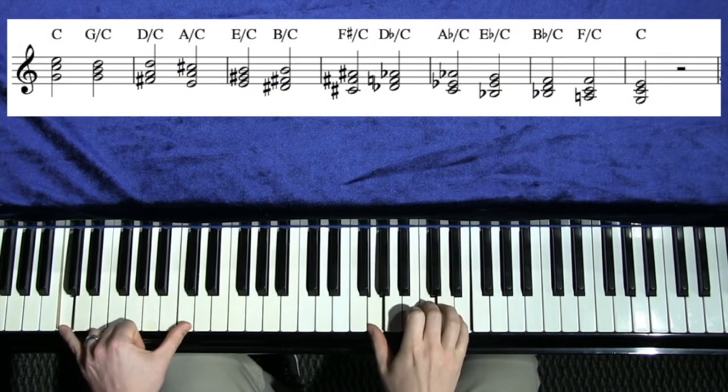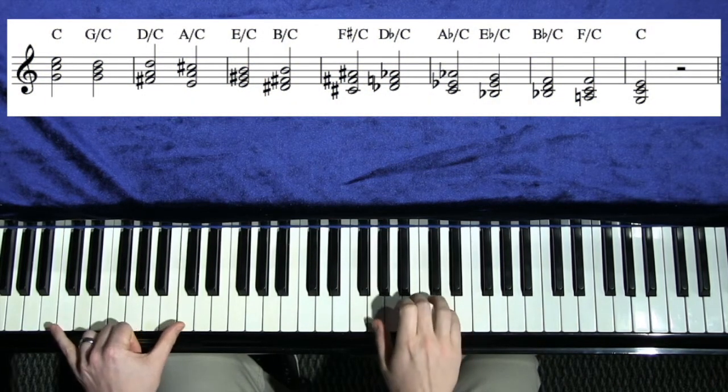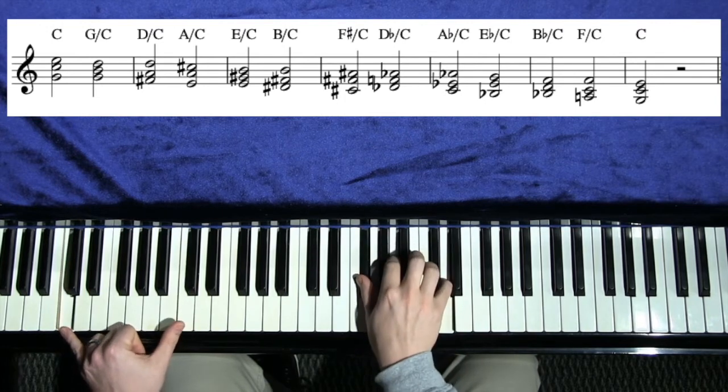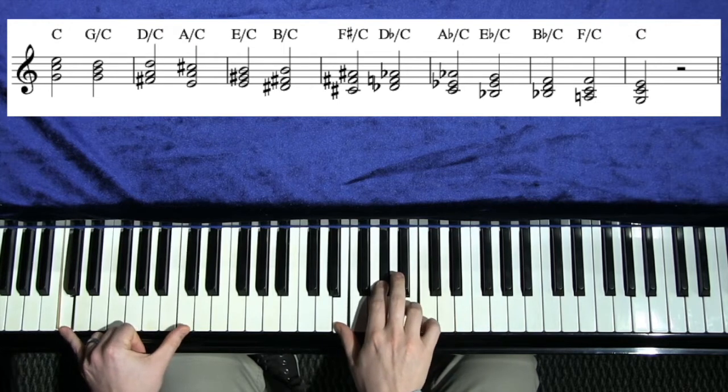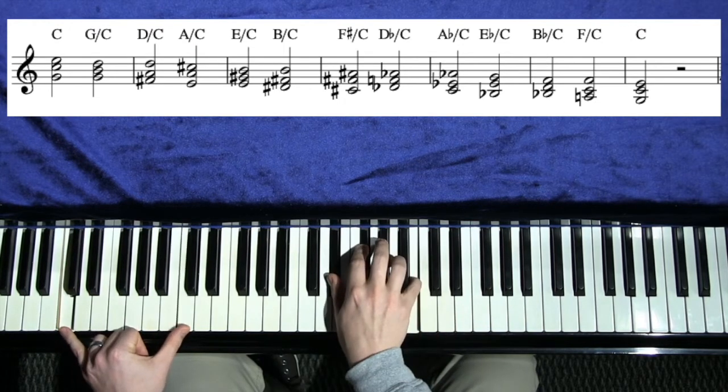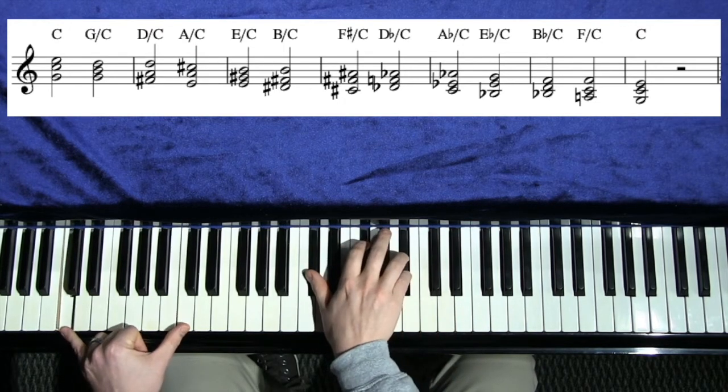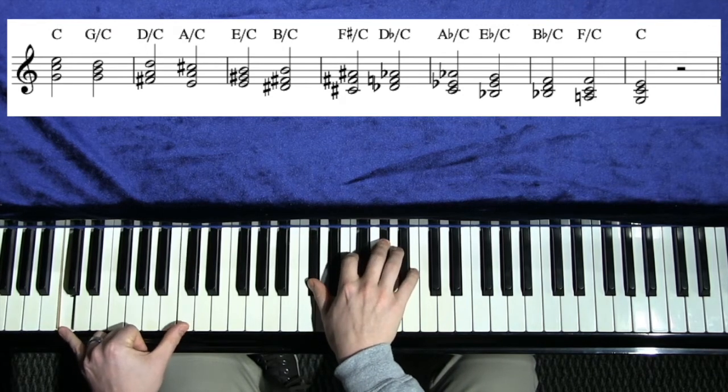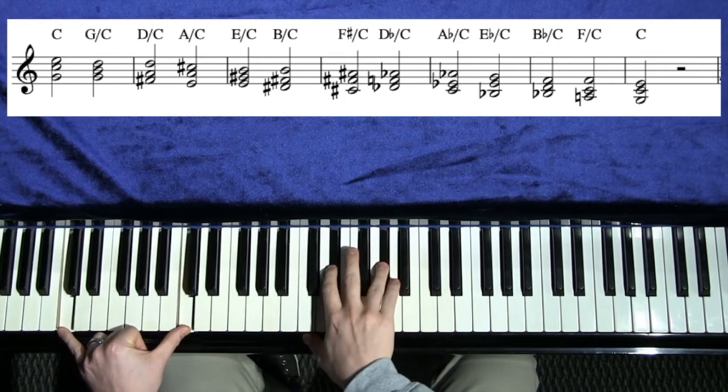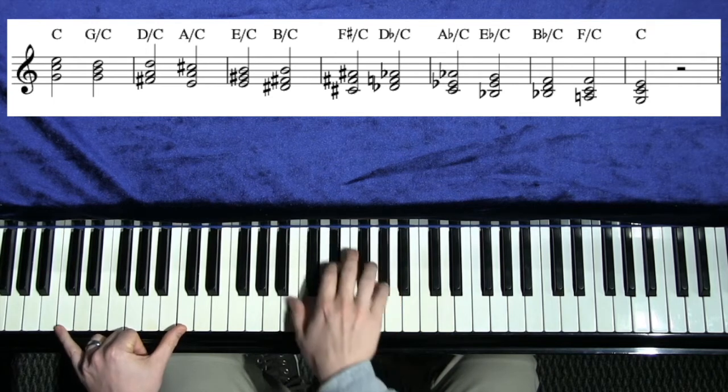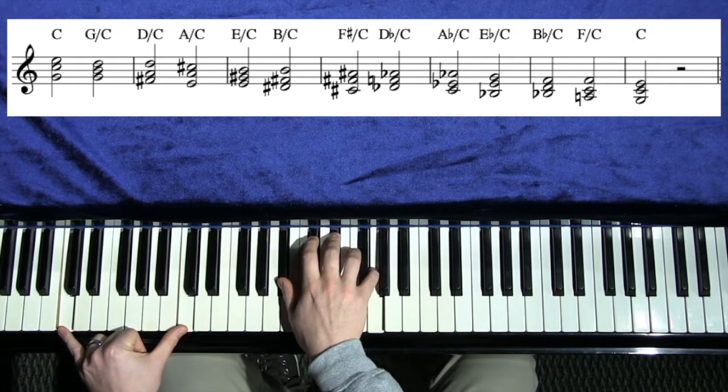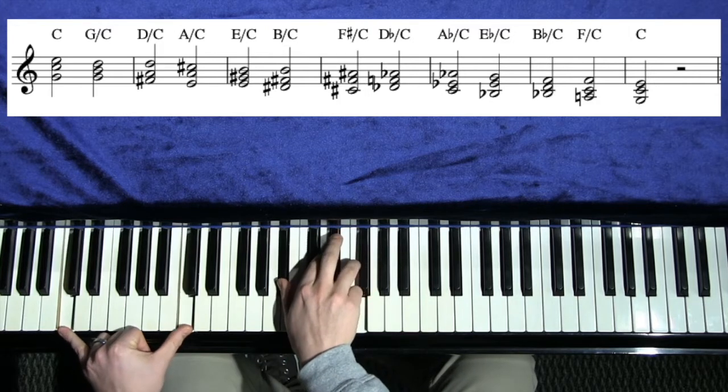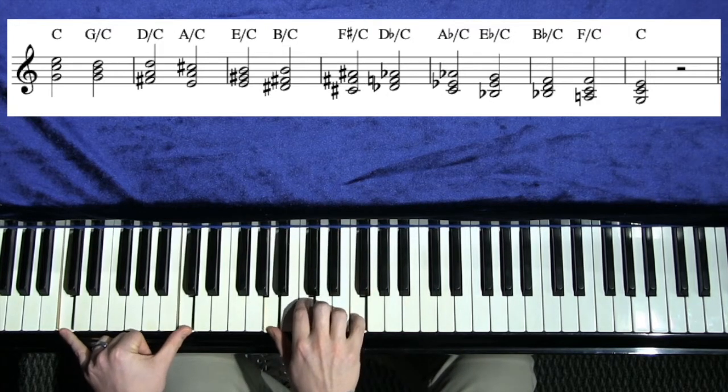So here we go. We start out with C, then we move it down to G over C, and then D over C, A over C. It's going to get a little bit out, E over C, B over C, F sharp over C, D flat over C, A flat over C. It's starting to come back. E flat over C, B flat over C, F over C, and then back to C.